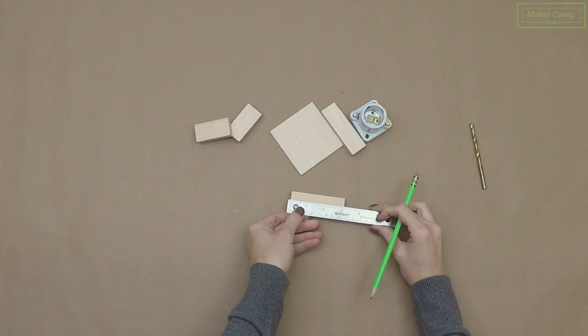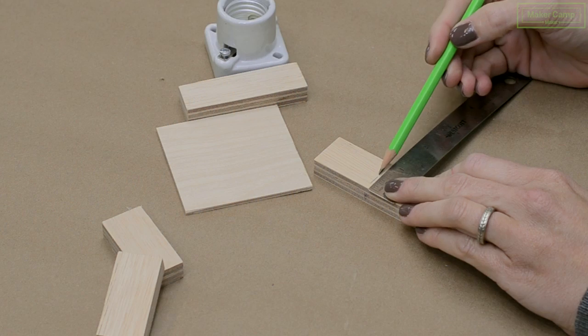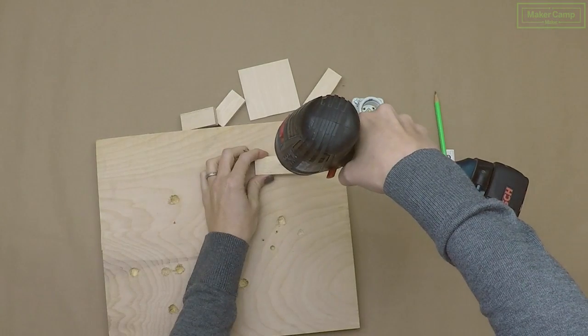Now let's build our lamp base. But before we assemble it, let's drill a hole for our lamp cord right in the middle of one of the longer side pieces.